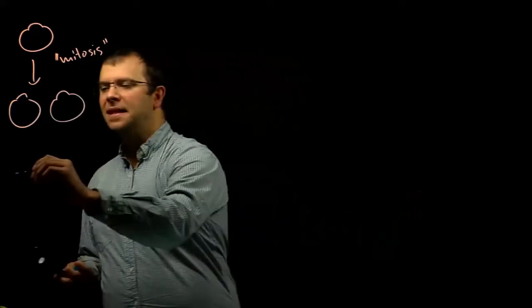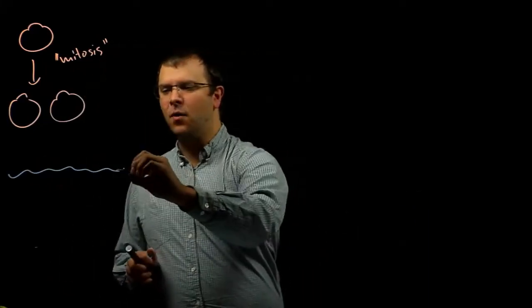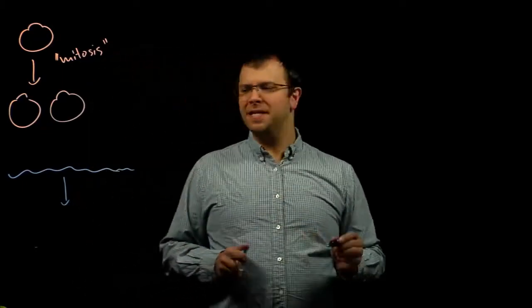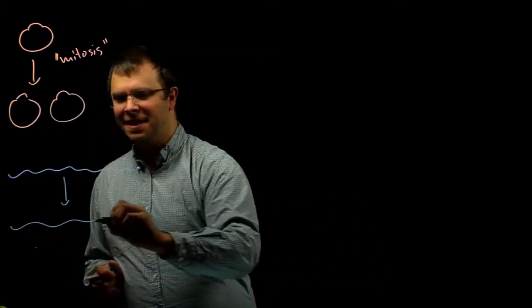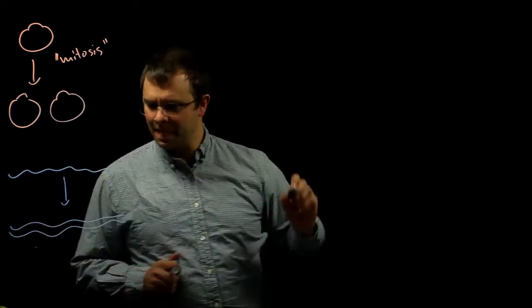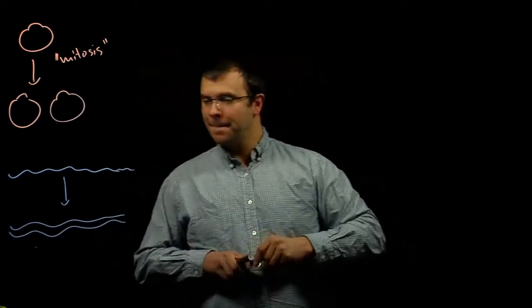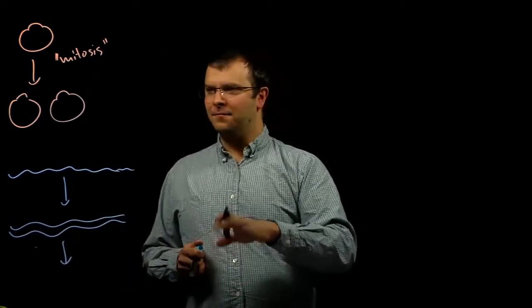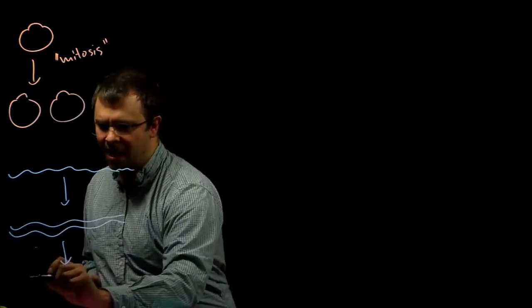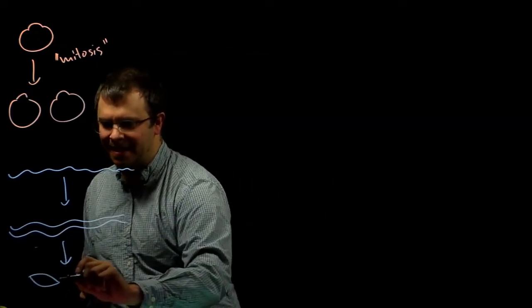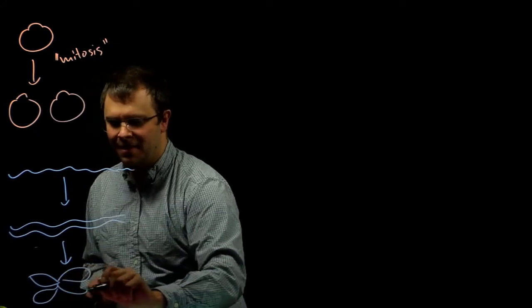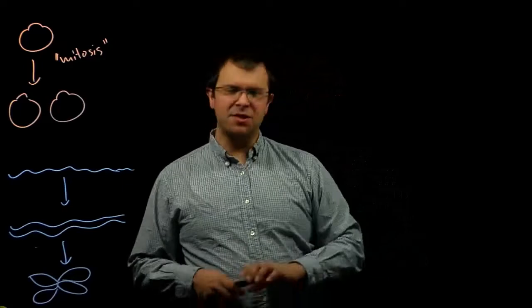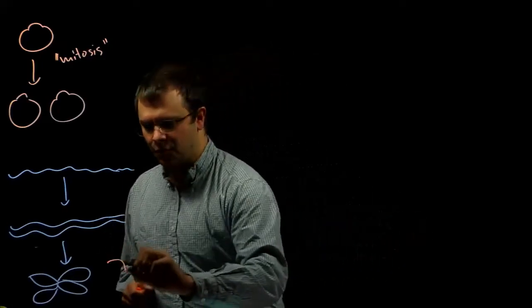So let's draw ourselves a piece of one of these chromosomes. At some point, that piece of DNA got copied. And then right before the cells divide, then those two copies kind of condense into a structure that looks kind of like this.